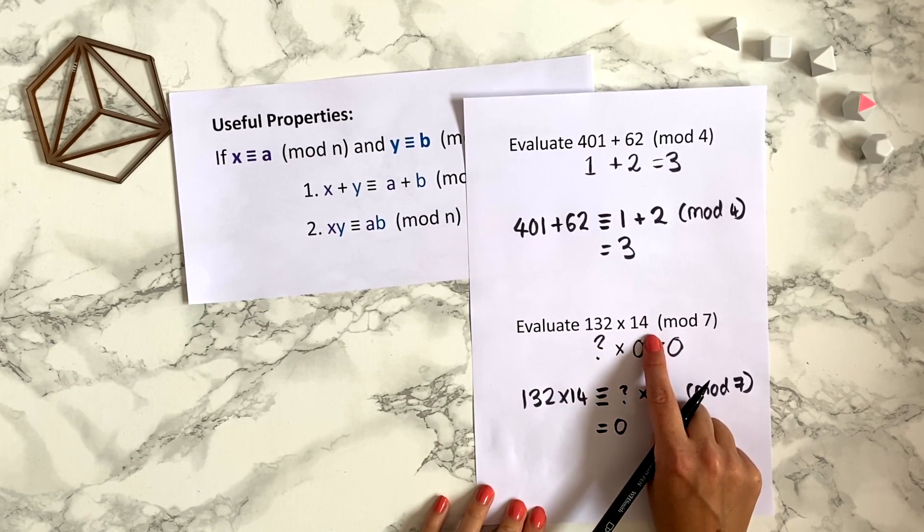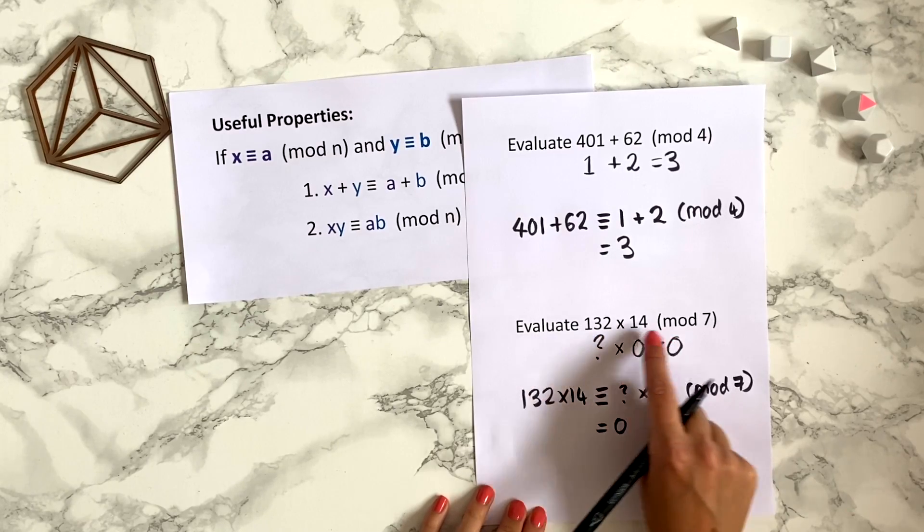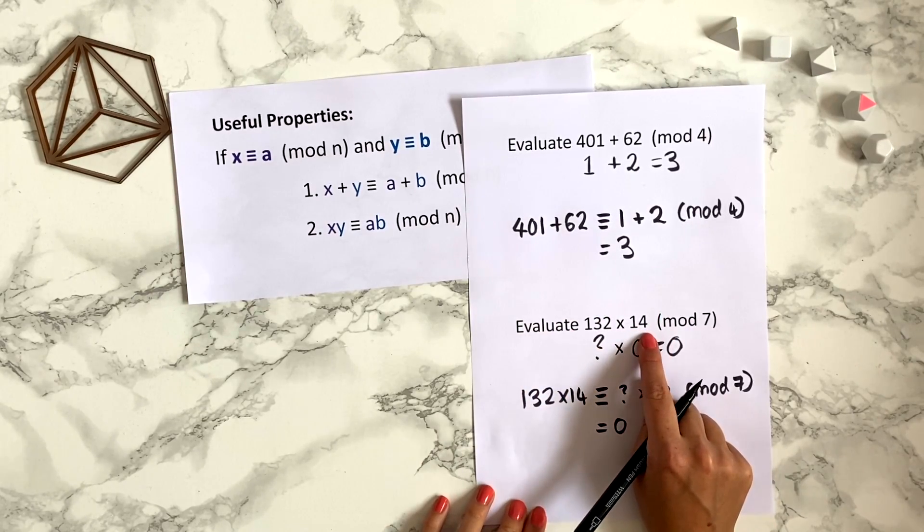So you can see this theorem saved us a lot of work as we didn't really need to calculate very much, as we knew that this was congruent to 0. We didn't have to do this big multiplying out calculation first.